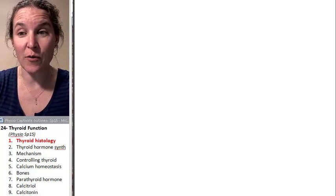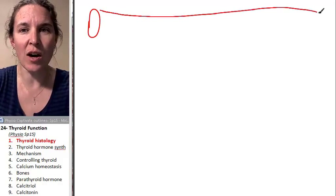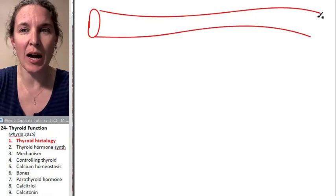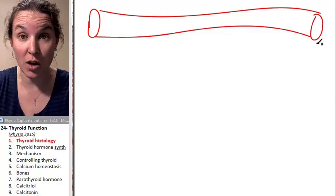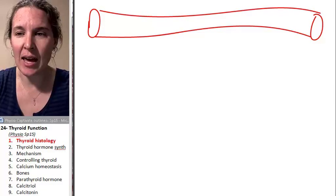What I want you to remember, first of all, if we're going to be producing hormone, we've got to make sure that we've got a blood supply nearby, and so all of our follicles are going to have a blood supply nearby. A follicle is literally a